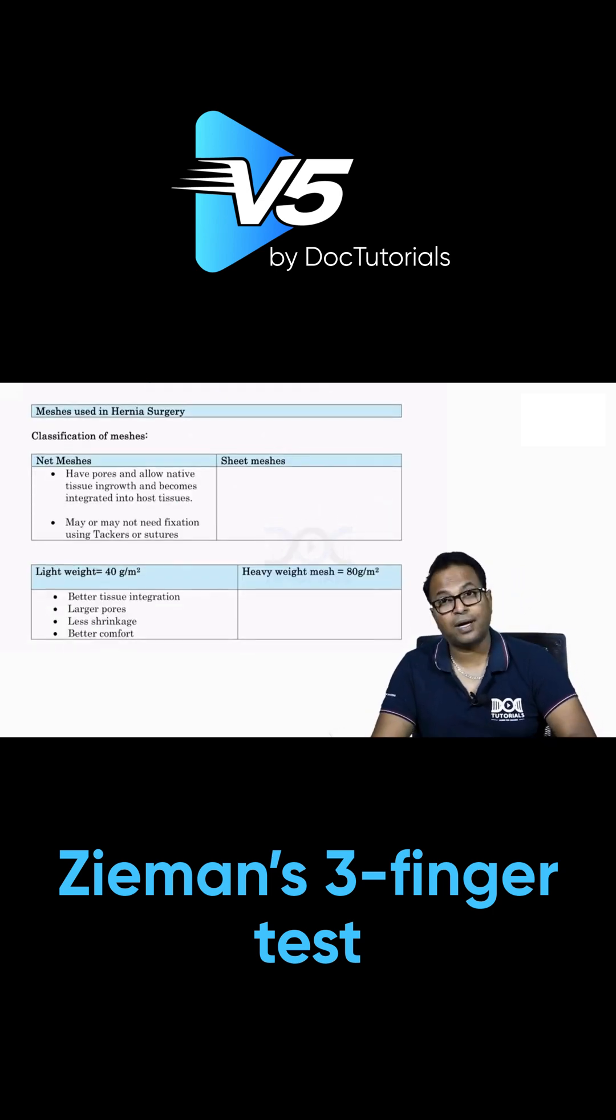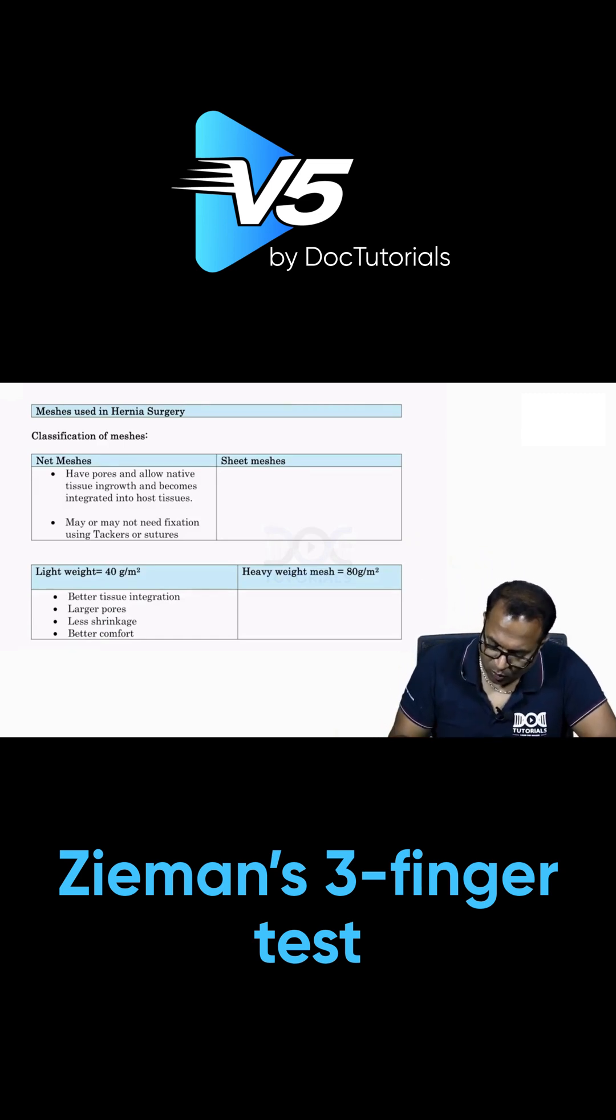Another basic thing you should not forget in hernia is meshes used in hernia. These are all very basic concepts. There are two types of mesh: one mesh which will be netted with small holes visible, and another mesh which will have no small defects and will be like a flat sheet.